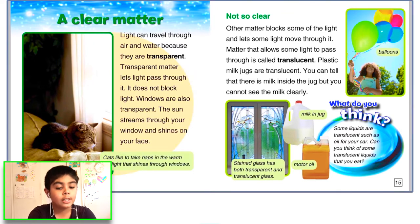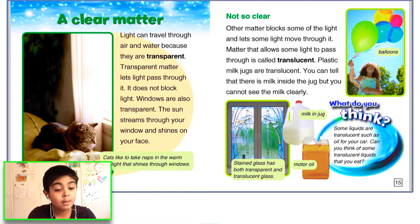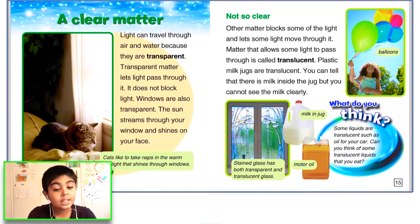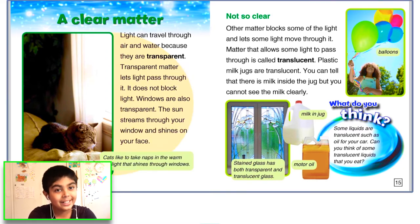Not so clear. Other matter blocks some of the light and lets some light move through it. Matter that allows some light to pass through is called translucent. Plastic milk jugs are translucent — you can tell there is milk inside the jug but you cannot see the milk clearly.